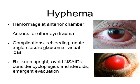Hyphema is a hemorrhage in the anterior chamber, due to bleeding from blood vessels at the root of the iris. This signifies significant eye contusion, and you should look for other possible traumatic injuries to the eye, like globe rupture and lens dislocation. The complications of hyphema include re-bleeding, acute angle closure glaucoma, and visual loss. In terms of management in the field, keep the patient upright and avoid NSAIDs as those can contribute to re-bleeding. Consider cycloplegics for symptom control and steroids. These patients will need emergent evacuation because they tend to develop acute angle closure glaucoma, which cannot be easily diagnosed in the field — they'll need serial tonopen measurements of intraocular pressures.